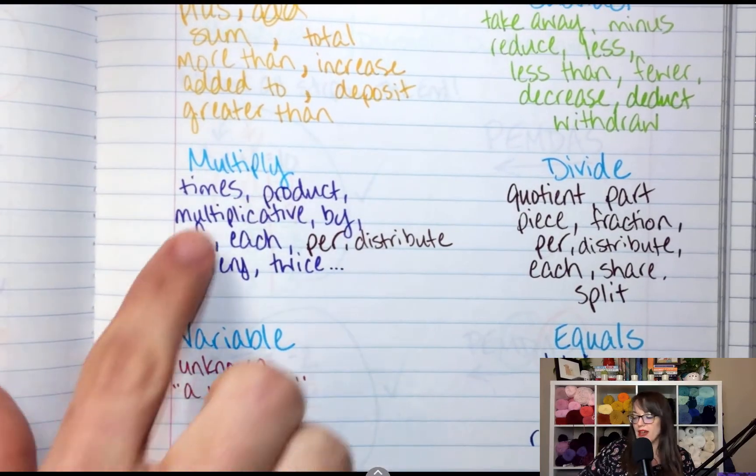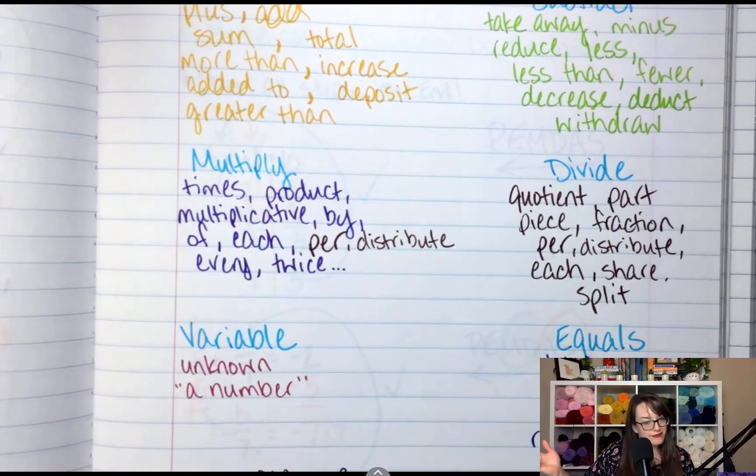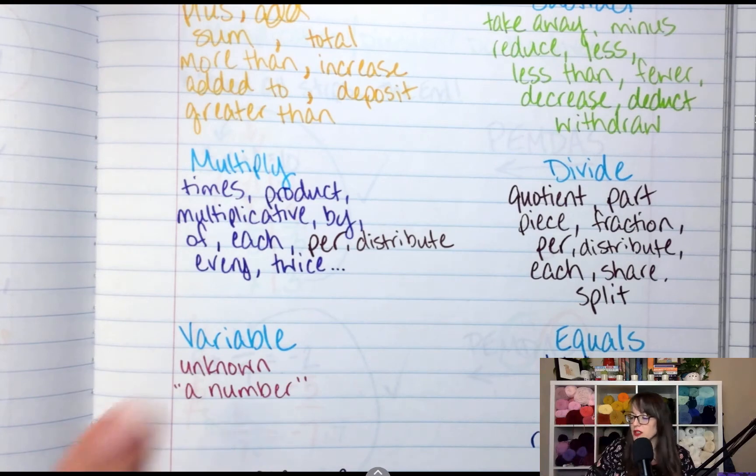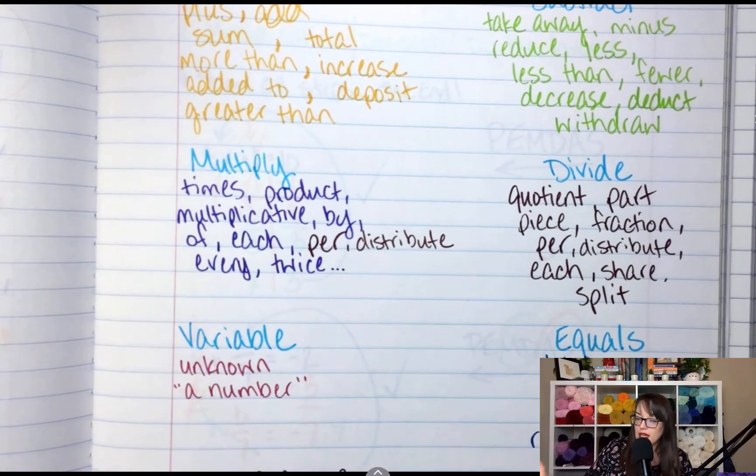Multiply. We've got times, the product, multiplicative. By, so like a 2 by 4 is 2 by 4, 2 times 4. Of, each, per, distribute, every, twice.